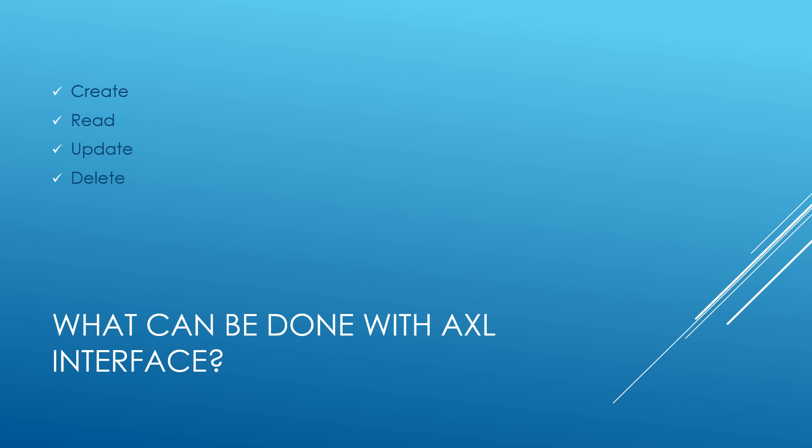So what are the tasks possible using the AXL API interface? Essentially it's CRUD operations: you can Create objects, Read data, Update information, and Delete data. For example, you could create a phone, search for a phone, update its description or directory number, or delete a phone from Call Manager — without ever logging into Call Manager directly. You just use the third-party provisioning application and perform these tasks via the AXL interface.